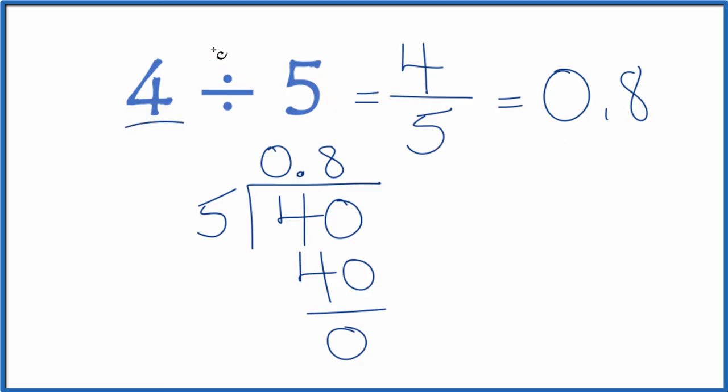So that's how you divide 4 by 5, you get 4 fifths or 0.8. This is Dr. B. Thanks for watching.